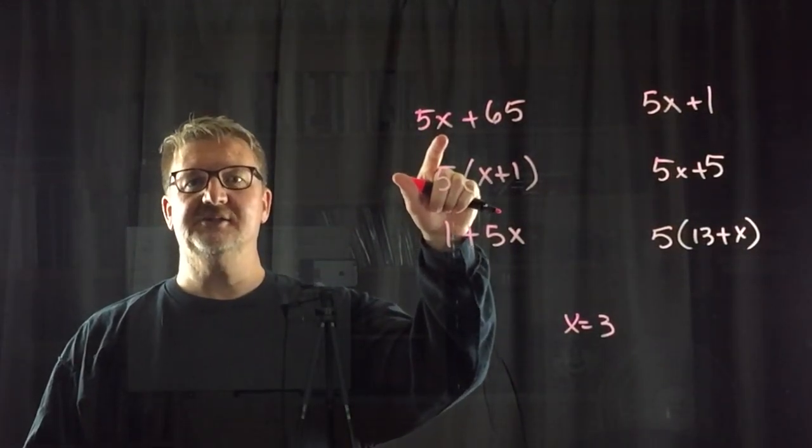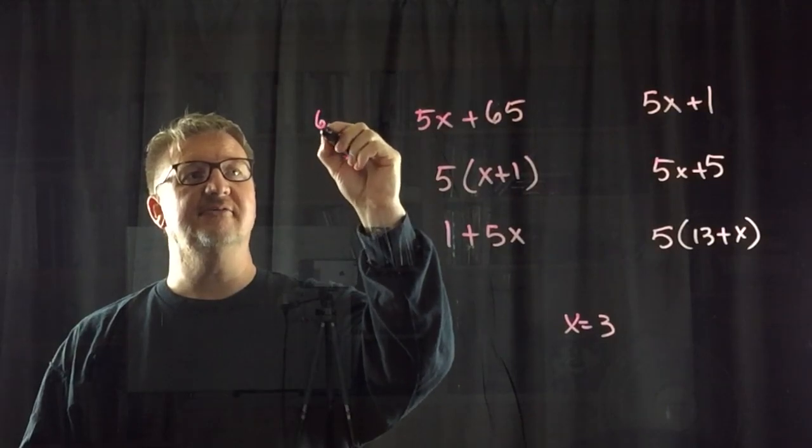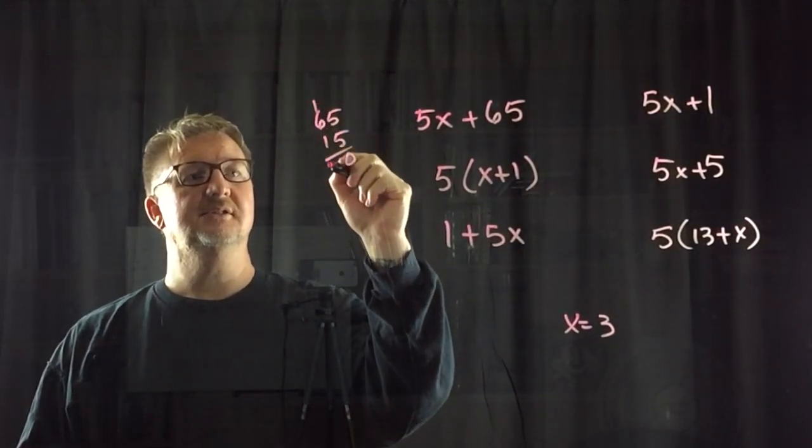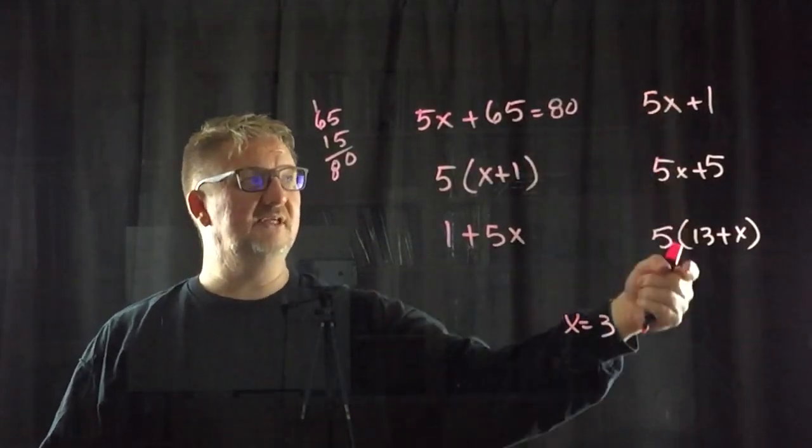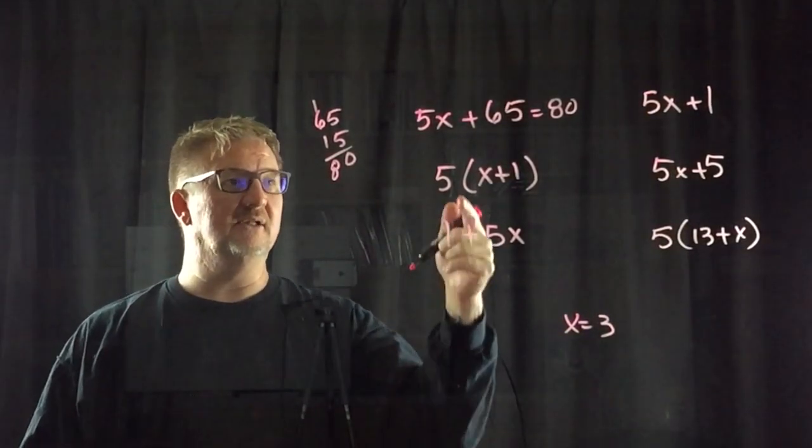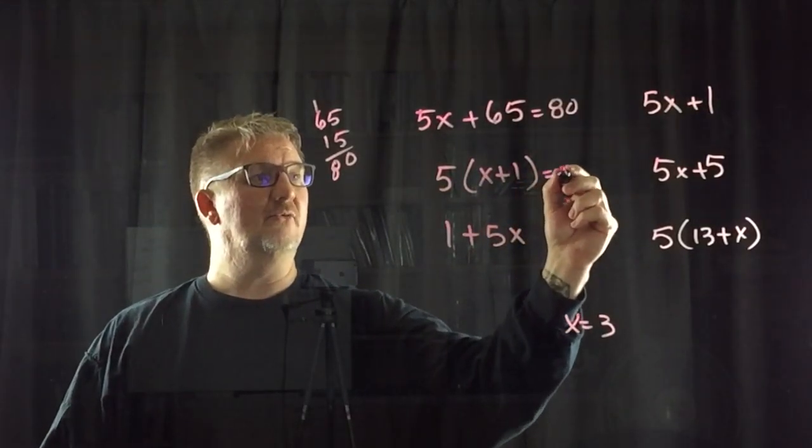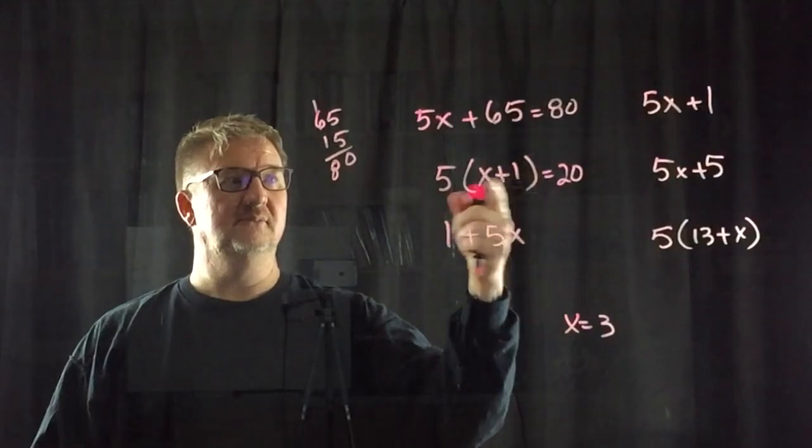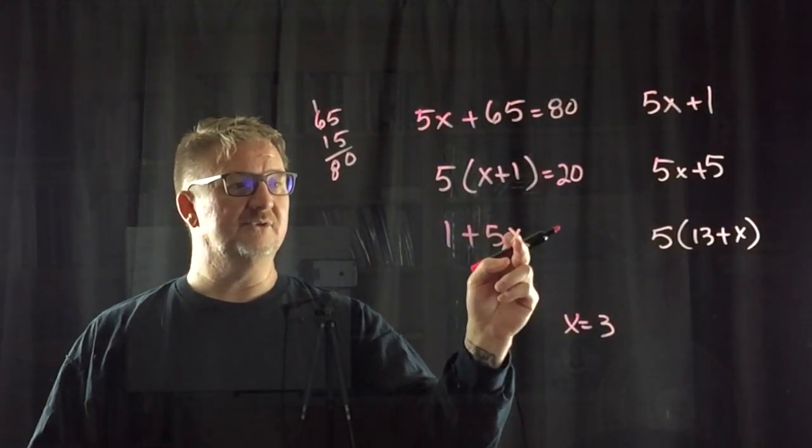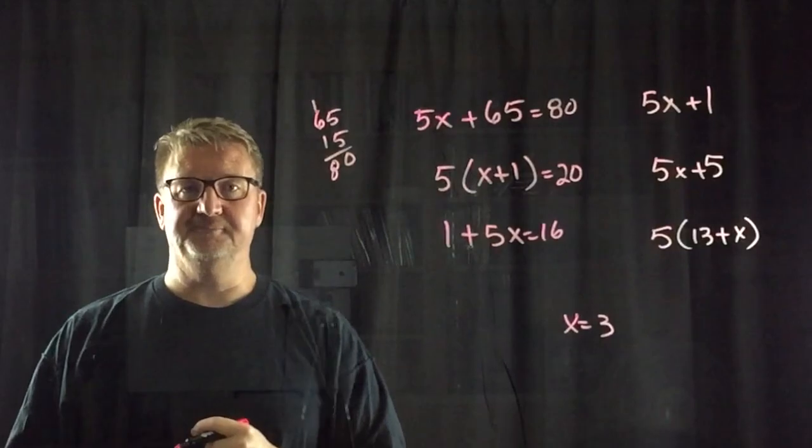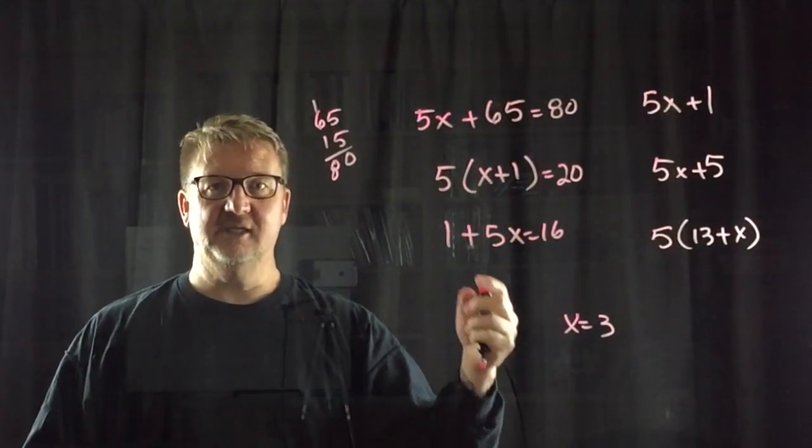Alright, so here we go. 5 times x, I'm going to say 5 times 3. 5 times 3 is 15. 15 plus 65, 6, 7, 8. Alright. So when x is 3, this expression is equal to 80. Okay, so one of these should be equal to 80 as well, but we'll get to that in a minute. Let's go ahead and solve the rest of these. So I'm going to plug in 3 for x again. 3 plus 1 is 4. 5 times 4 is 20. So when x is 3, this expression equals 20. Alright, so here we got this one, 5 times x, which is 5 times 3. 5 times 3 is 15 plus 1 is 16. Alright, so now I got my three values for each one of these expressions using x as the same value for each one.